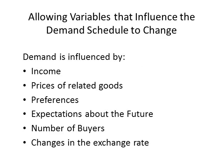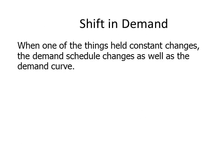In this next section, we will look at the situation where there are changes in things that we assumed were constant. In this part of the video, we'll look at what happens when the consumer's income changes, the price of related goods changes, consumer preferences change, expectations about the future, and the exchange rate changes. When any of these variables change, the entire demand schedule changes, and the demand curve will change positions as well.